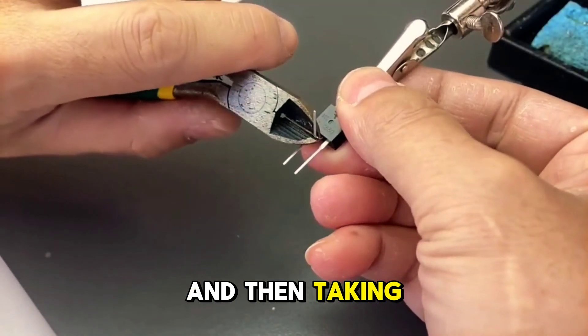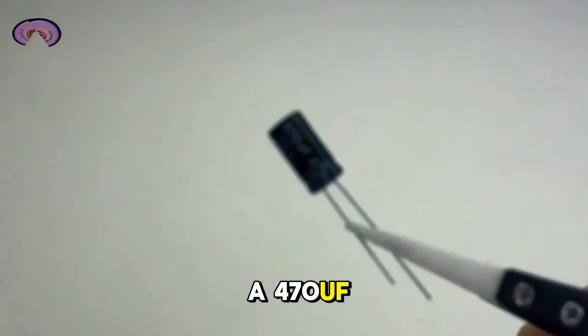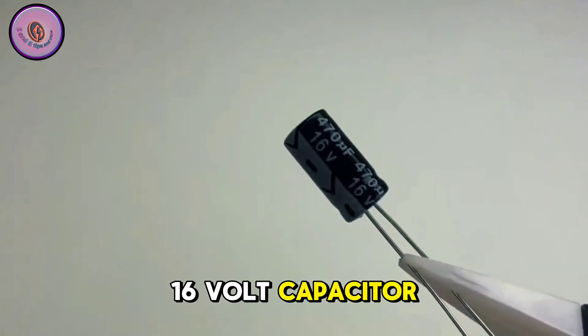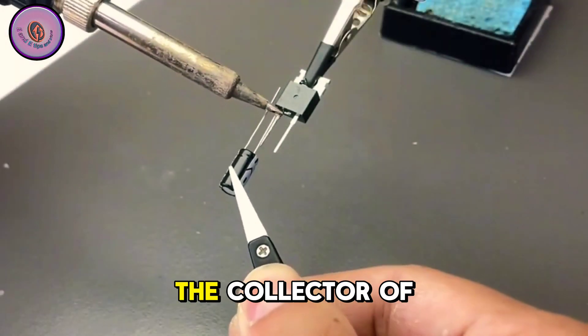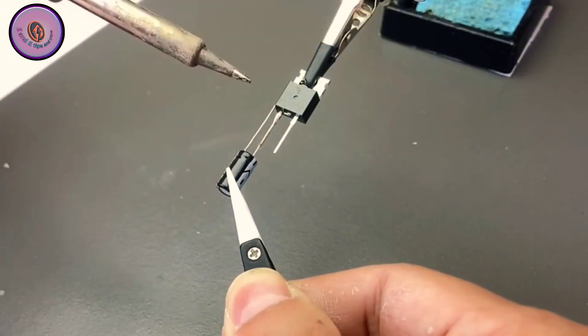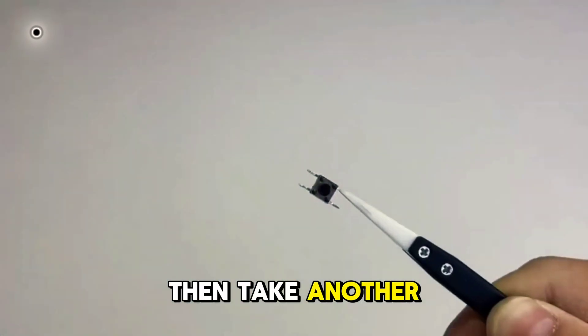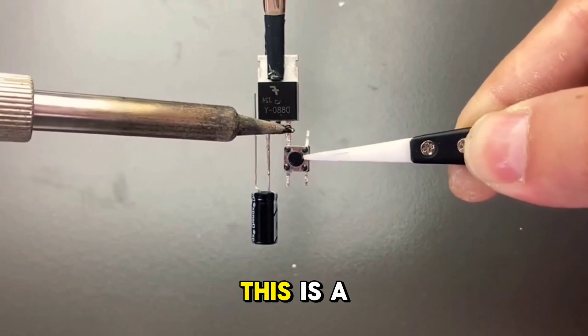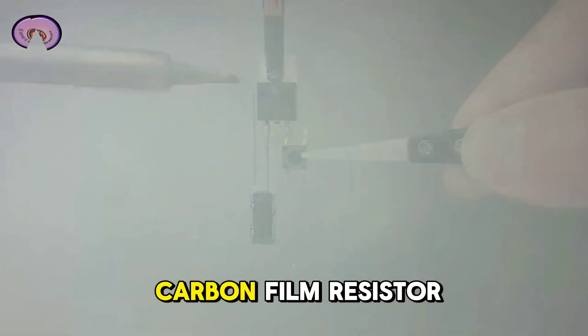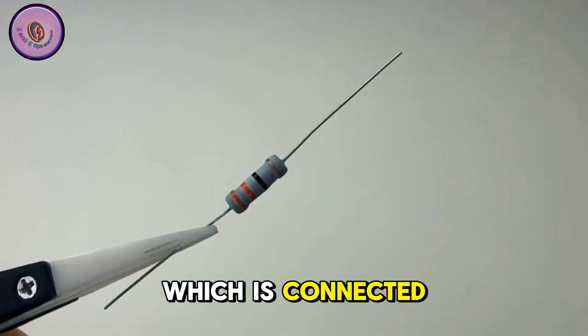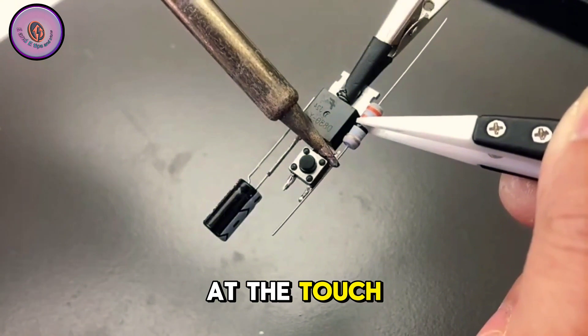Then take a 470 microfarad 16 volt capacitor and connect its negative electrode to the collector of the triode. Then take another tap to switch to the emitter of the triode. This is a 33 ohm 1 watt carbon film resistor which is connected to the other end of the switch.